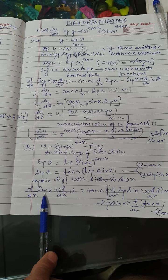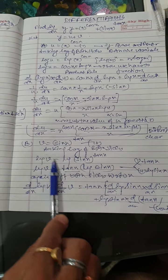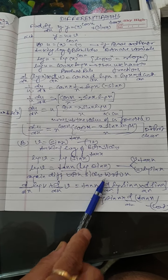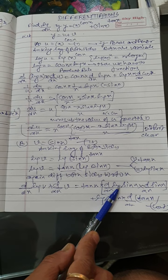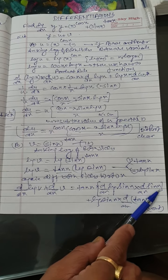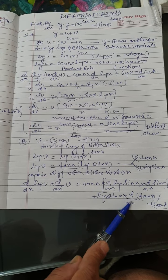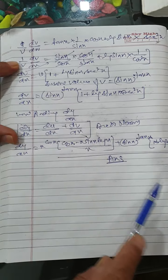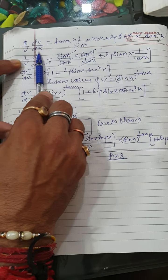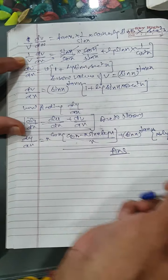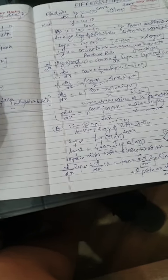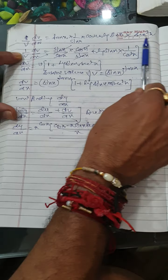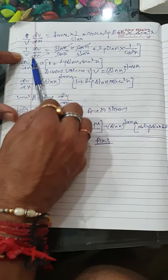Differentiating both sides with respect to x: d/dx of log v gives one upon v times dv/dx on the left. On the right, first function tan x times d/dx of log sine x, and by chain rule d/dx of log sine x equals one upon sine x into cos x, plus log sine x times d/dx of tan x which is sec squared x.